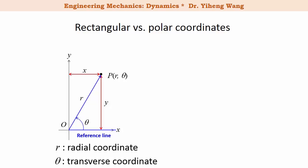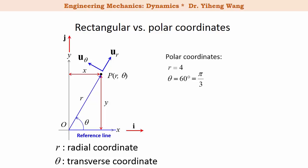If you recall, for the x axis its unit vector is known as i, and for the y axis its unit vector is known as j. For the r axis it also has a unit vector representing its direction, which is known as u_r, and for the transverse coordinate it also has a unit vector, u_theta, which is always perpendicular to u_r. So if we have polar coordinates r equals 4, theta equals 30 degrees or π/3 radians, then this point will have coordinates of 4, 60 degrees or 4, π/3, and we can translate that into x, y coordinates.